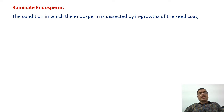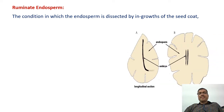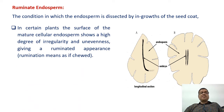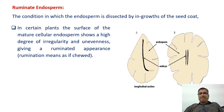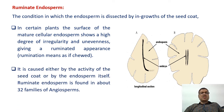Ruminate endosperm is the condition in which the endosperm is dissected by ingrowth of the seed coat. In certain plants, the surface of the mature cellular endosperm shows a high degree of irregularity and unevenness, giving a ruminated appearance — rumination meaning as if chewed. It is caused either by the activity of the seed coat or by the endosperm itself, and ruminate endosperm is found in about 32 families.